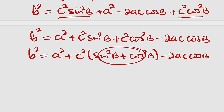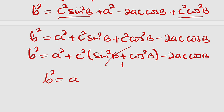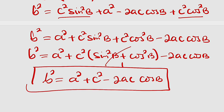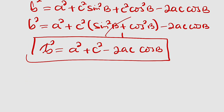Remember that sine squared of an angle plus cosine squared of an angle equals 1 — we proved this in our previous lesson. So that entire expression simplifies to 1, giving us b squared equals a squared plus c squared minus 2ac cosine B. This is the cosine rule formula in terms of b.